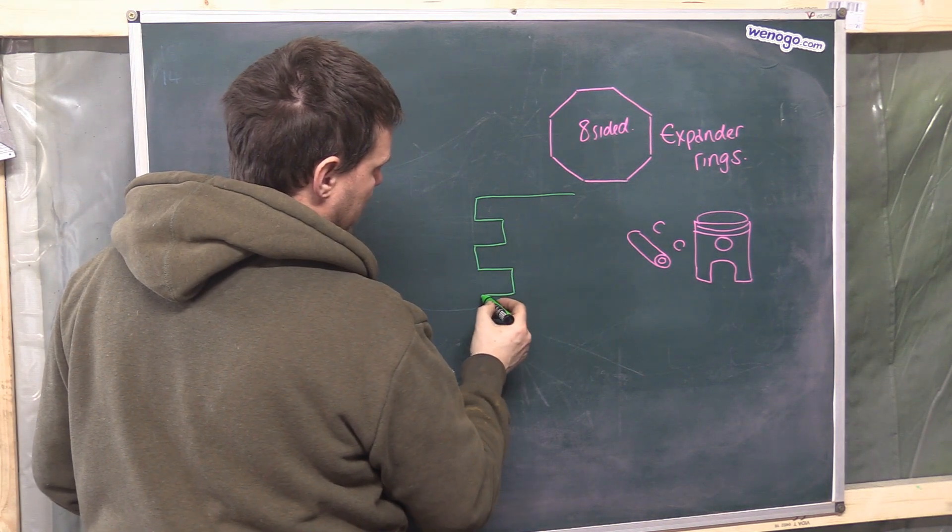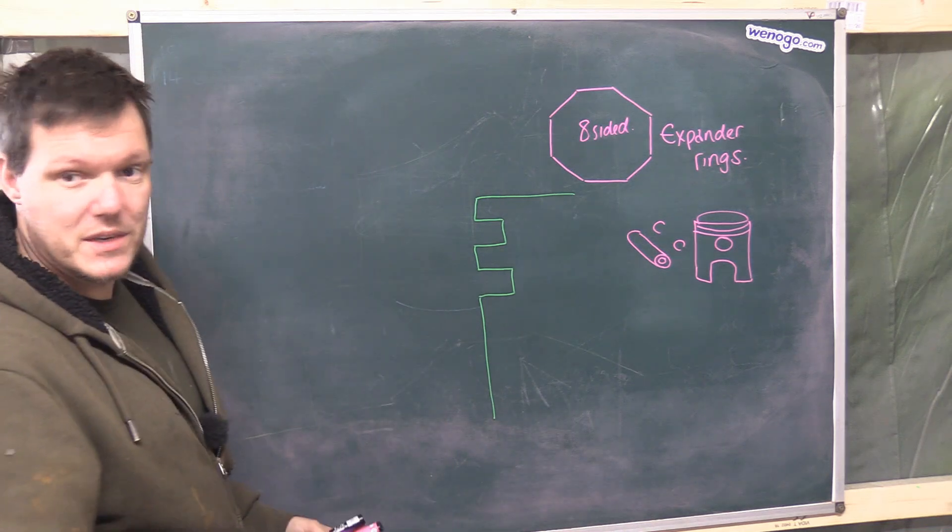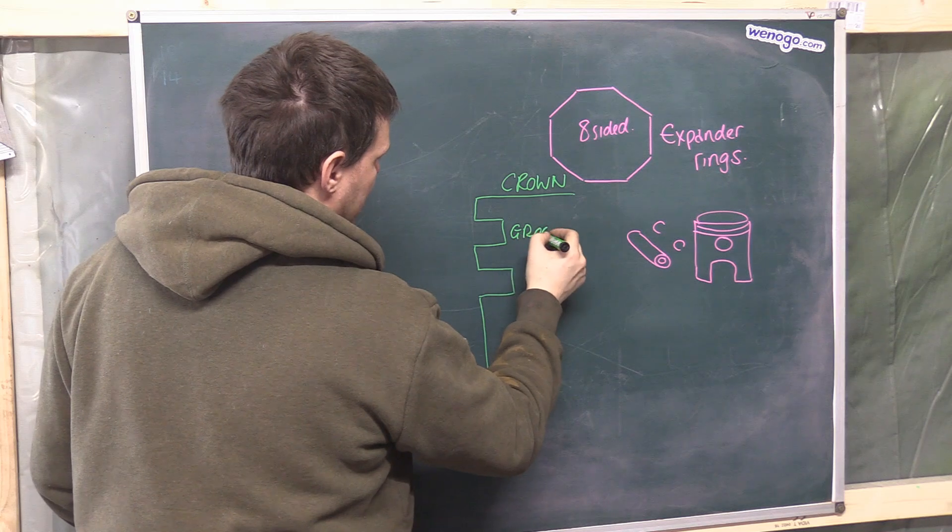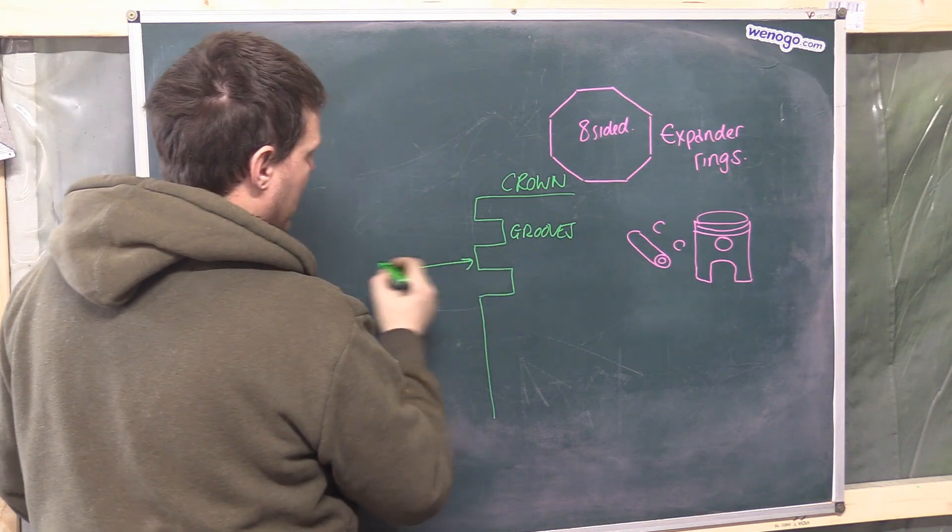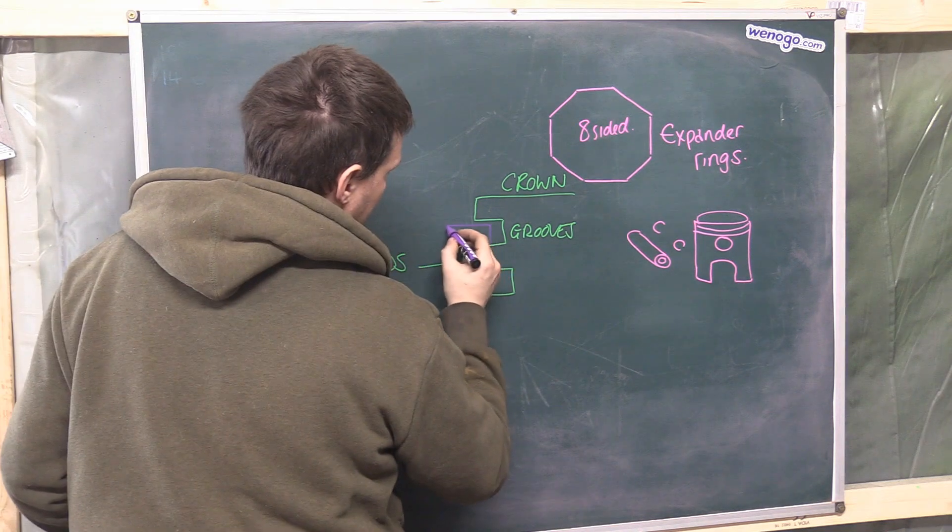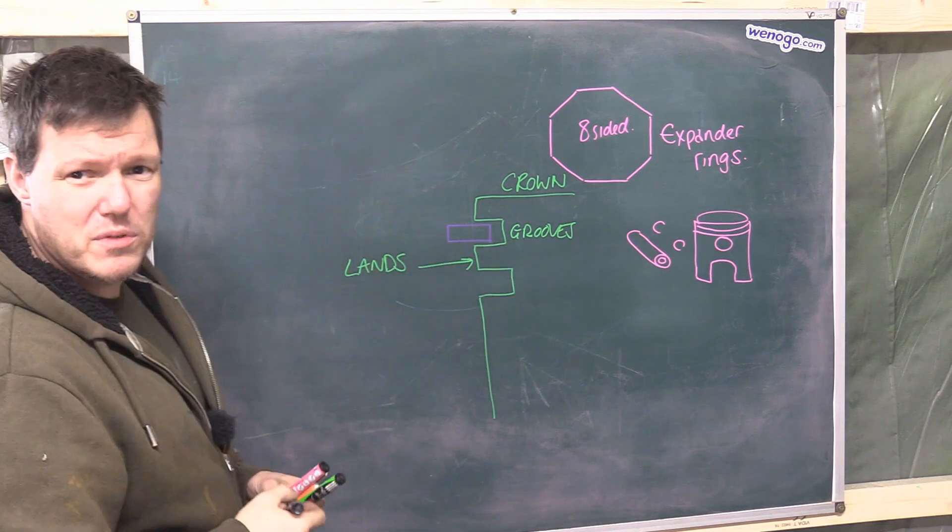You've got your ring groove, your ring land which is what this thing is, and then you've got another ring groove and then you have the rest of your piston. So this is your crown of your piston, these are grooves for obvious reasons, and these bits here are called lands.